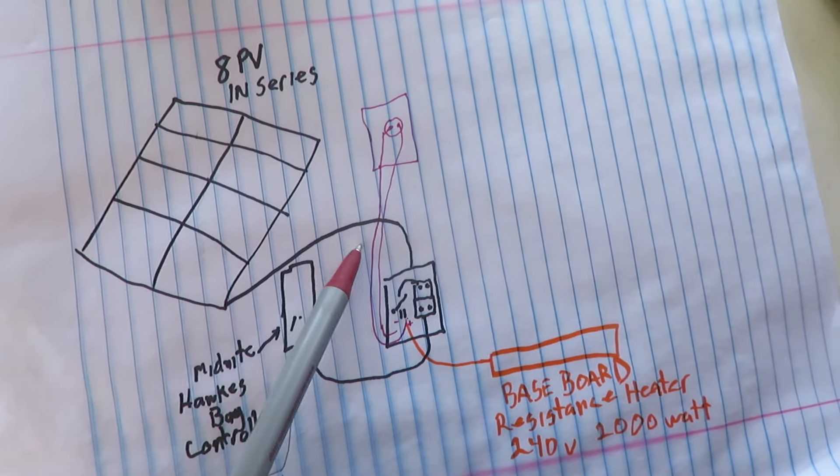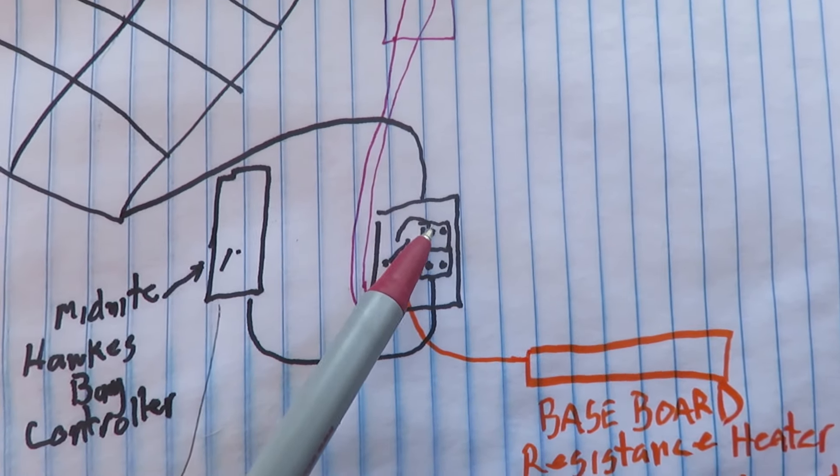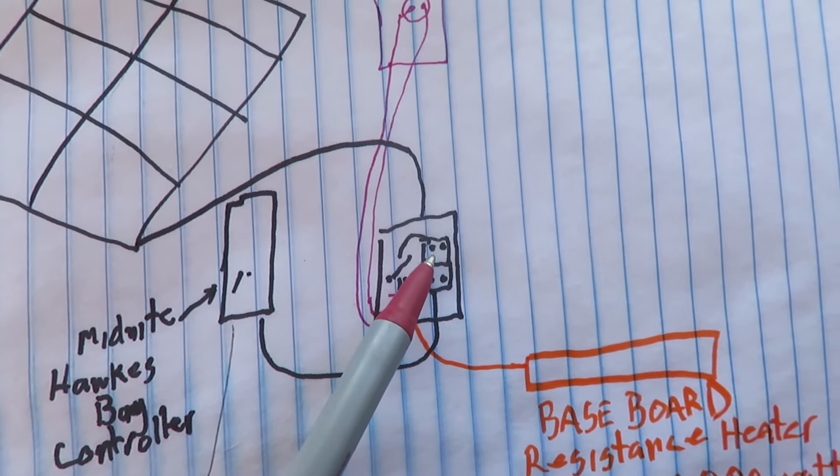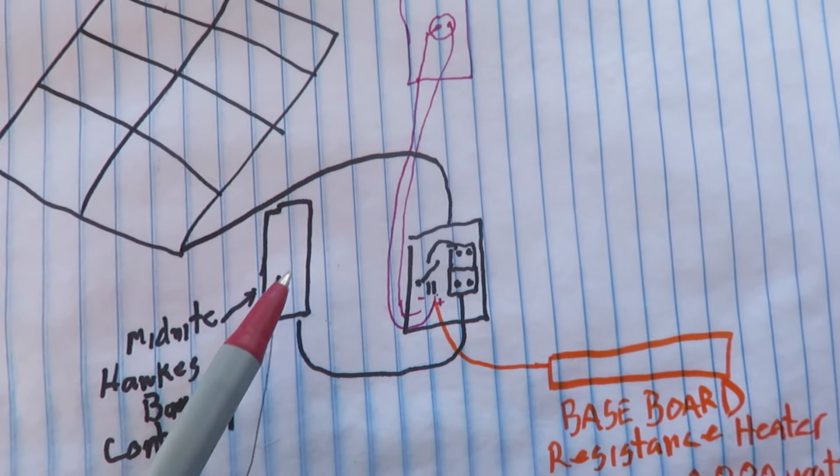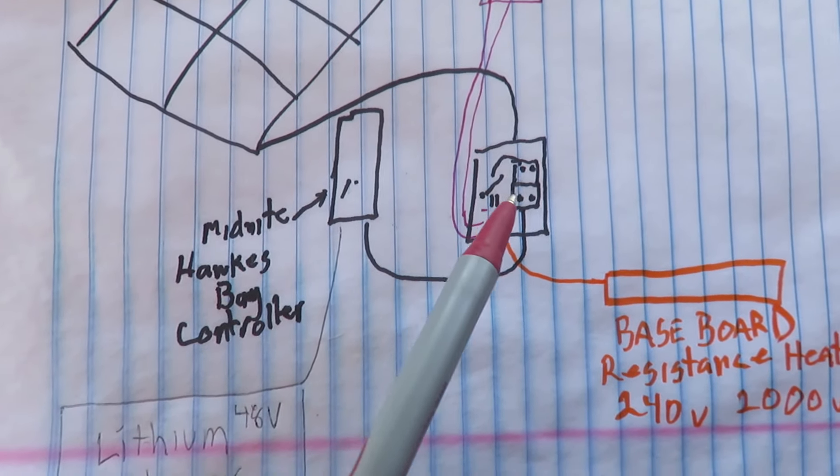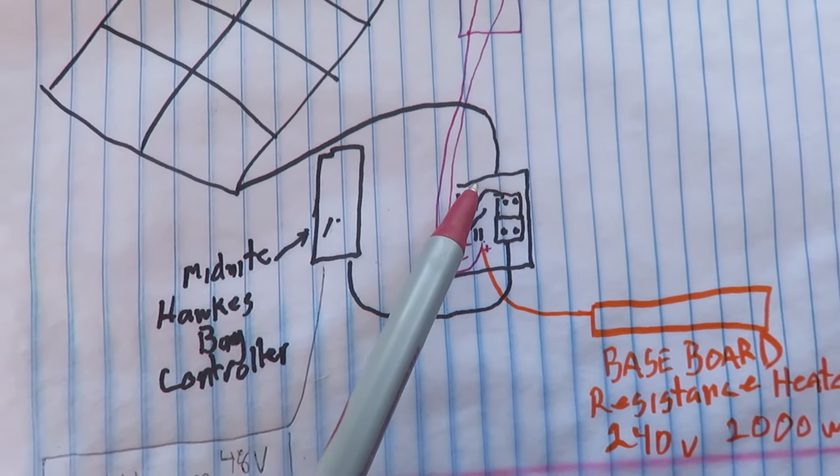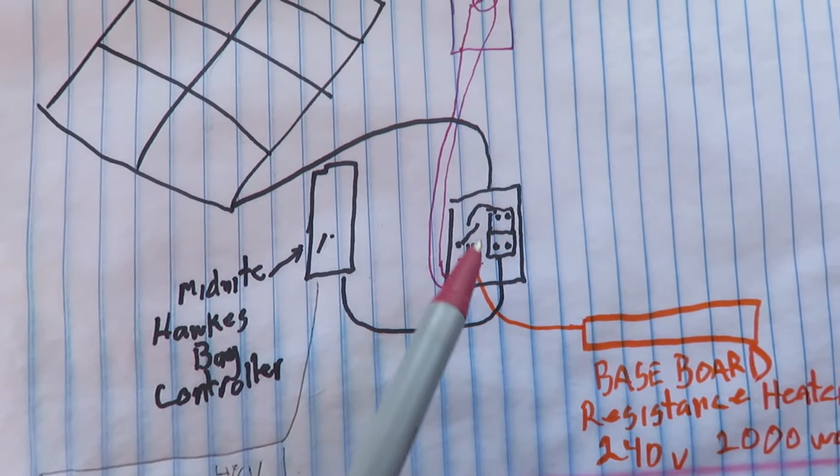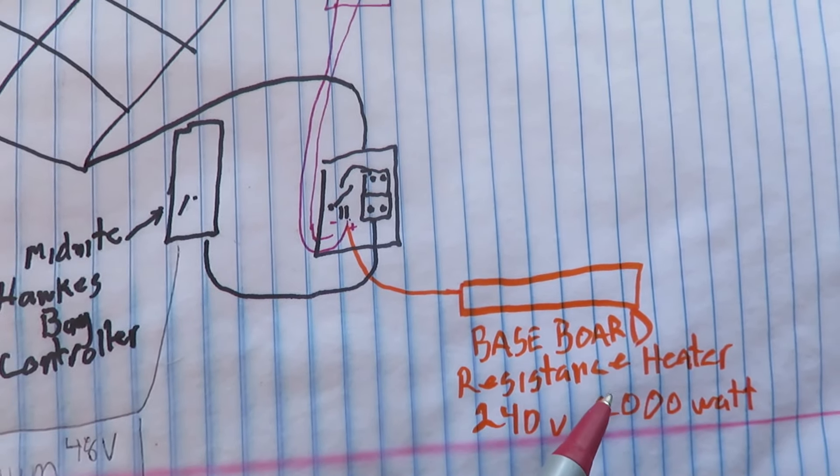They come out, go inside to this junction block. Junction block goes to the midnight controller that goes to the batteries to charge batteries, or bypass here will go to the baseboard heater here, 240 volt 2000 watt heater.